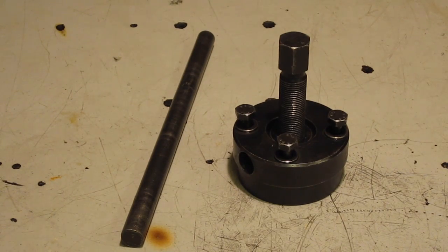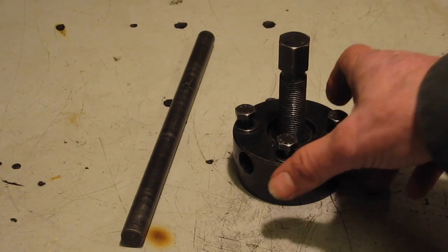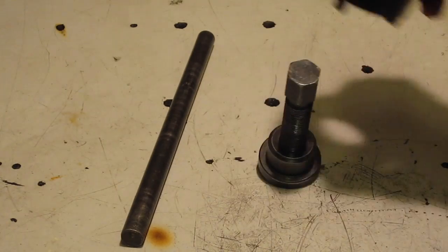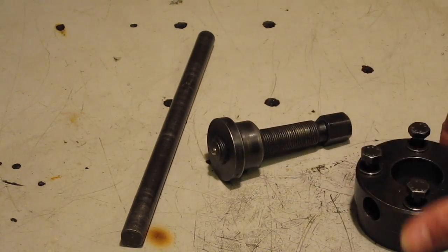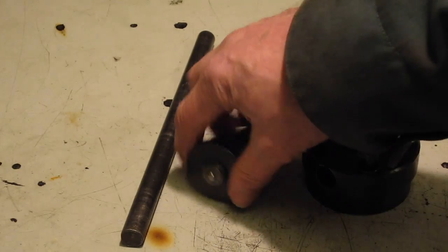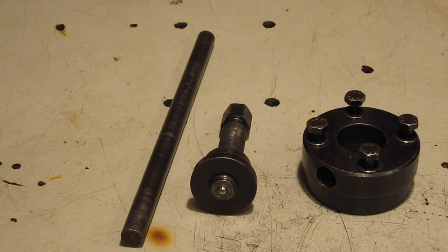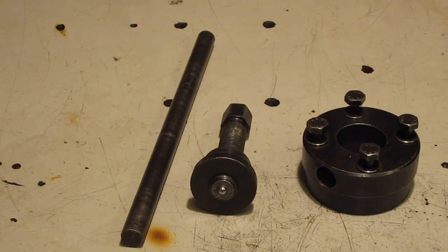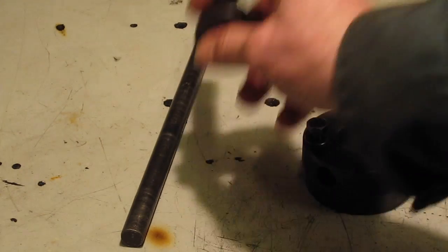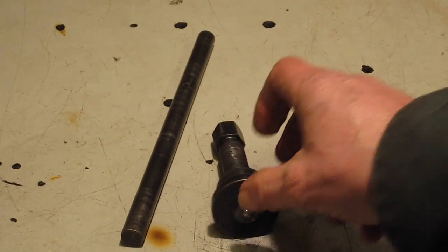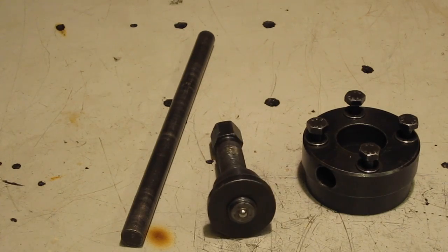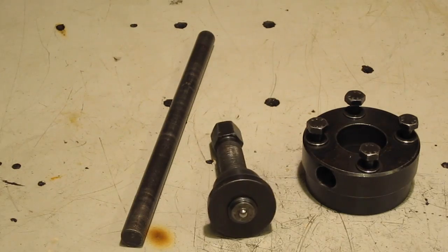This gearbox output shaft flange puller comes in three parts. You use this tool for removing the nut on the back of the gearbox output shaft flange, and then you use the puller part for taking the flange off, which should be held tightly on a taper.